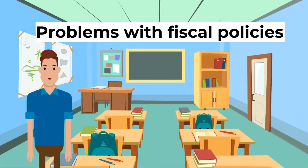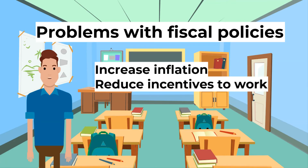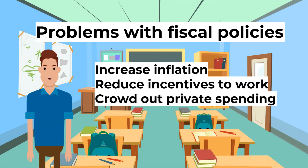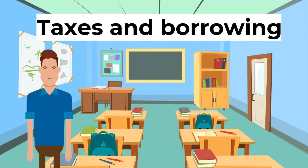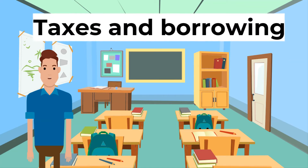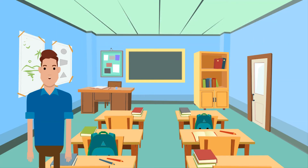Some problems with fiscal policy include: too much public spending can cause inflation; increases in taxes on incomes and profits can reduce incentives to work and enterprise; and public spending can crowd out private spending. Remember, public spending has to be financed — either by raising taxes from household and corporate incomes, or by government borrowing from the private sector. An increase in borrowing will raise interest rates.